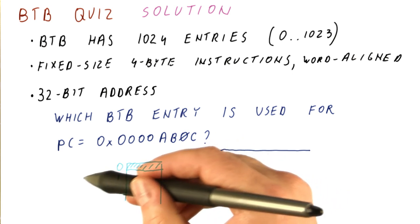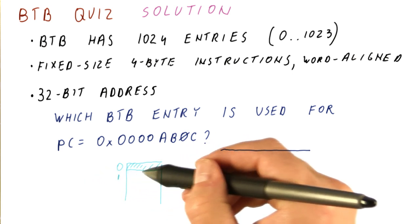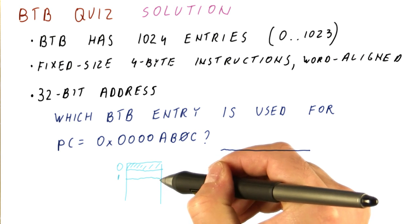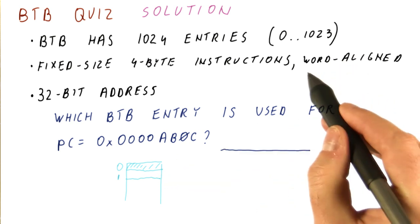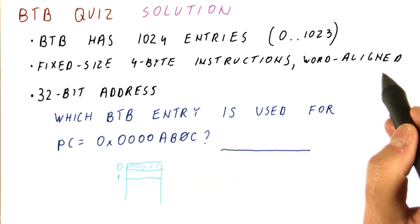requires the least significant 10 bits to be all zeros and then one. And that entry cannot be used because the instructions are word aligned.